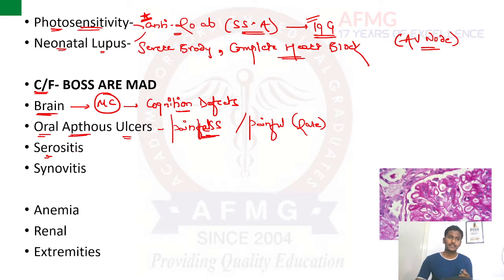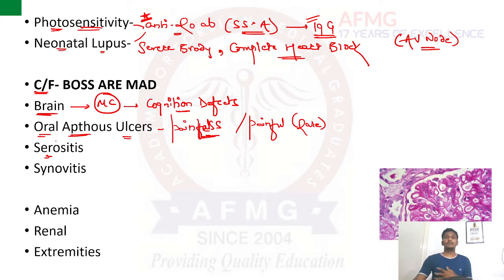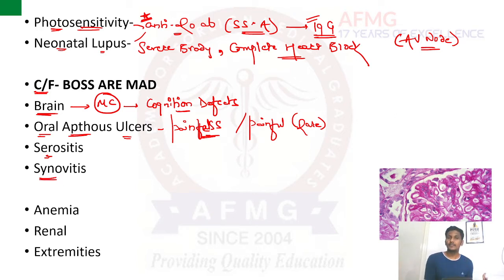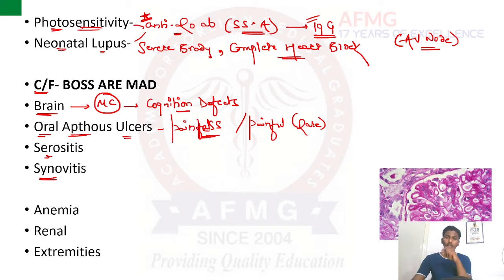S goes for serositis — inflammation of serous cavities like the pleural or pericardial cavity — leading to lung and heart manifestations. The next S goes for synovitis. The patient commonly presents with musculoskeletal manifestations like arthralgia or myalgia.